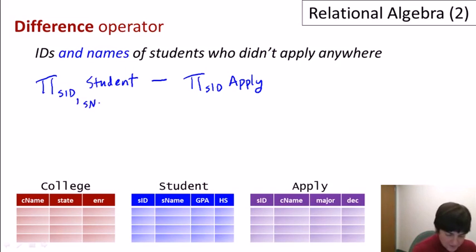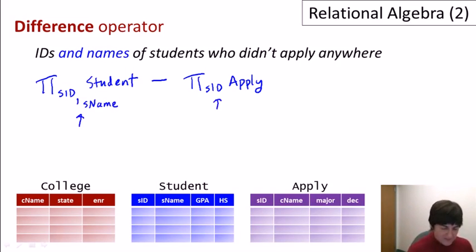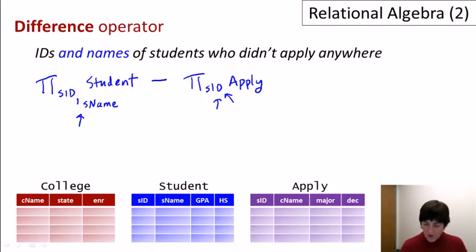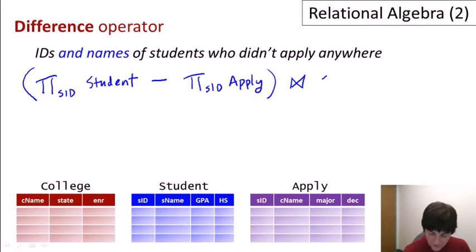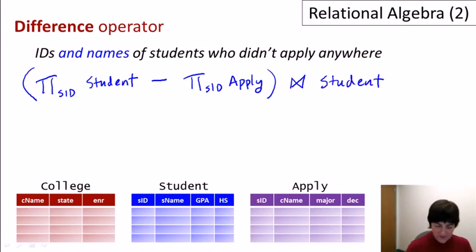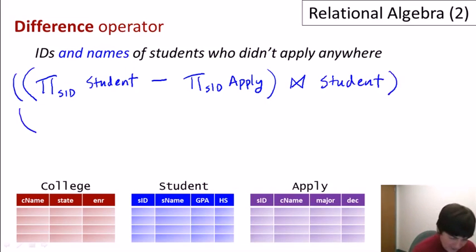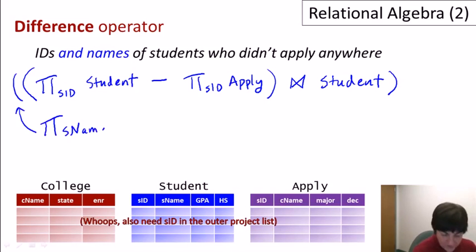You might think to just add student name to the projection list, but then we'd be trying to subtract a set with just IDs from a set with a pair of ID and names. And we can't add the student name to the apply projection because student name isn't part of the apply relation. The trick is: take the whole expression giving us student IDs who didn't apply anywhere and do a natural join back with the student relation — called a join back. This gives us a schema that is the student relation itself, and then we just add a projection of the student name to get our desired answer.